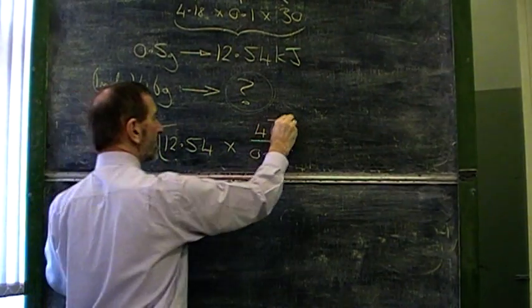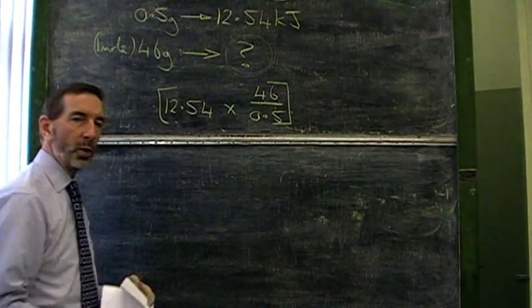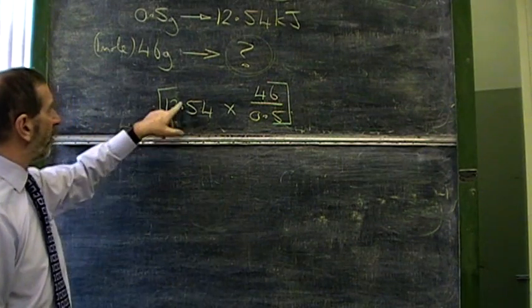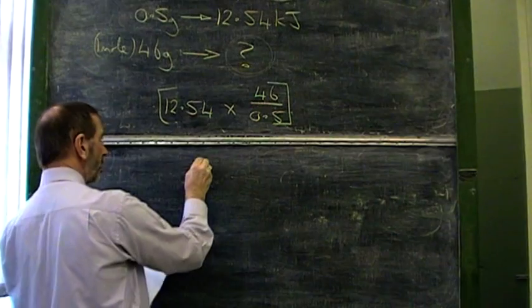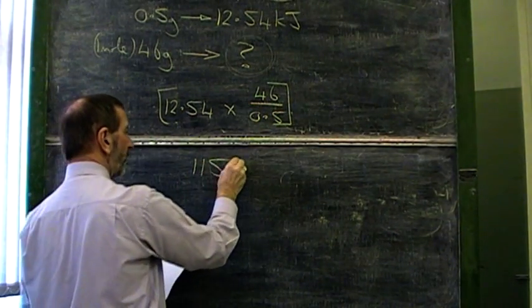Again, if you do this simple calculation, you can work out how much energy would have been produced if 46 grams of ethanol had been burned. And it comes to 1153.